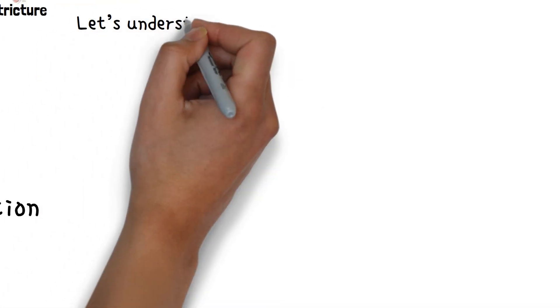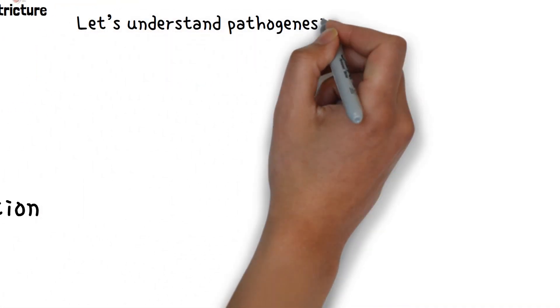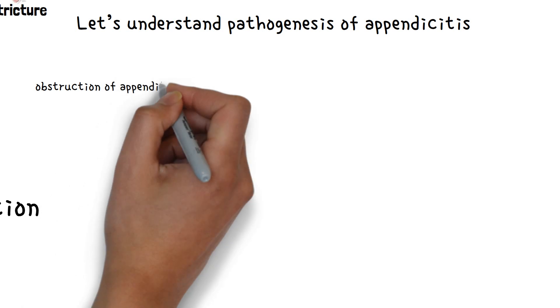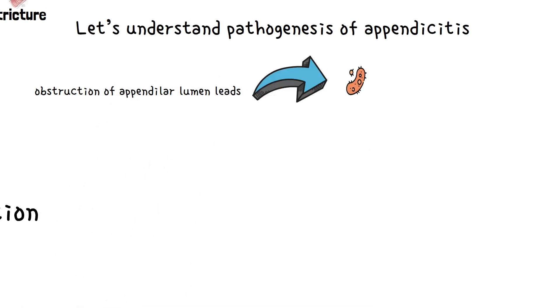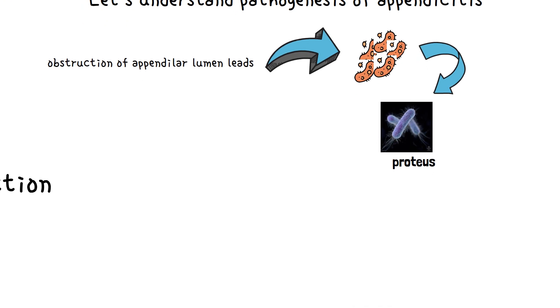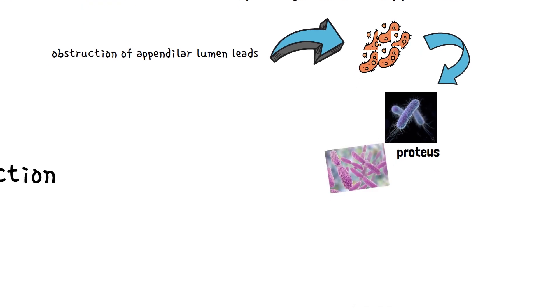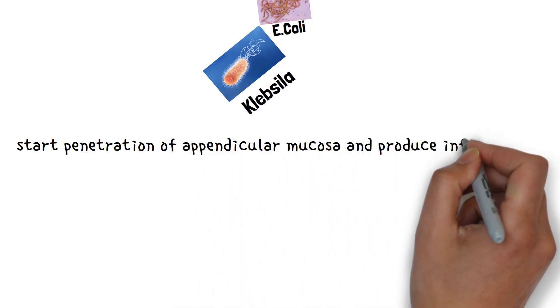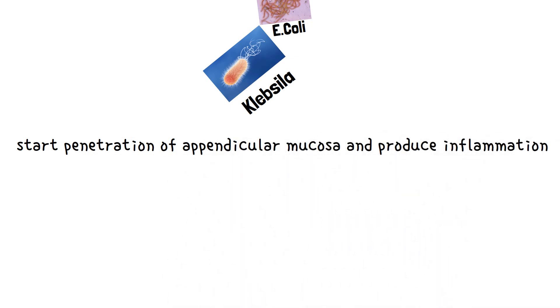Let's understand the pathogenesis of appendicitis. Obstruction of the appendicular lumen leads to overgrowth of normal flora like Proteus, Pseudomonas, E. coli, and Klebsiella, which start penetration of the appendicular mucosa and produce inflammation.